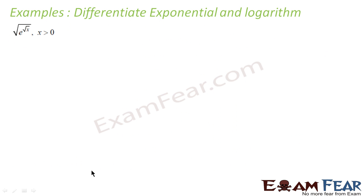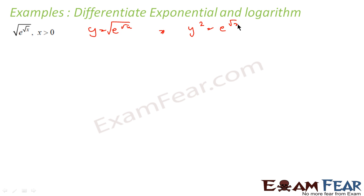Let's take one more example involving an exponential: y = √(e^(√x)). To make life simple, let's square both sides, so y² = e^(√x). Now I have to find the differentiation of this — it is an implicit expression.